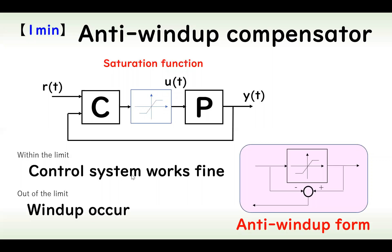But in the case where the signal is out of the limit, wind-up occurs. So to account for the saturation effect, we consider an anti-wind-up form in the control system.